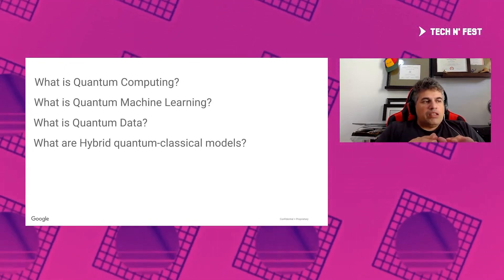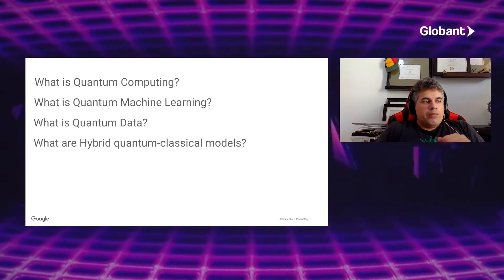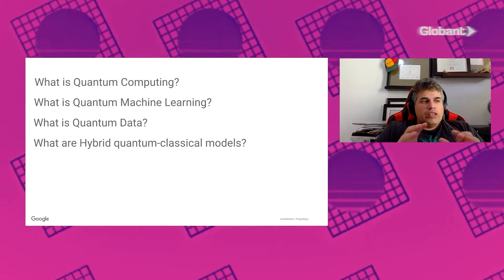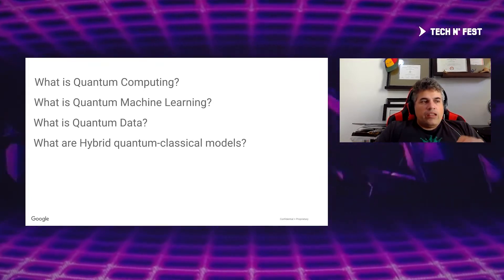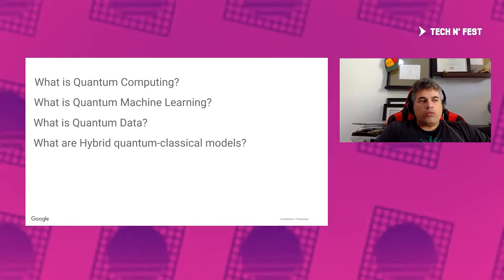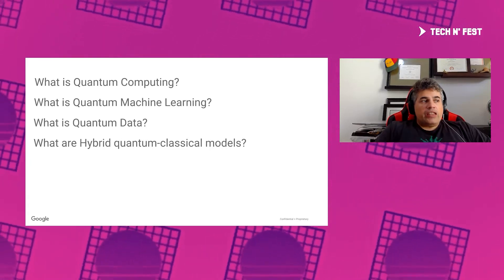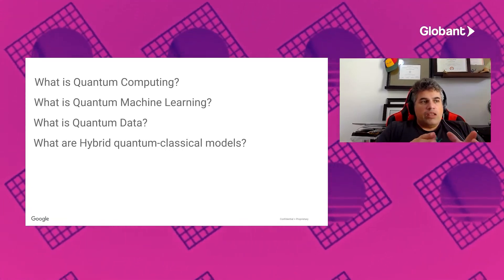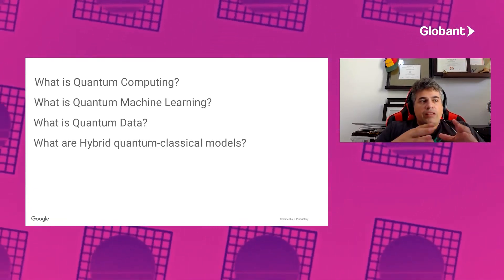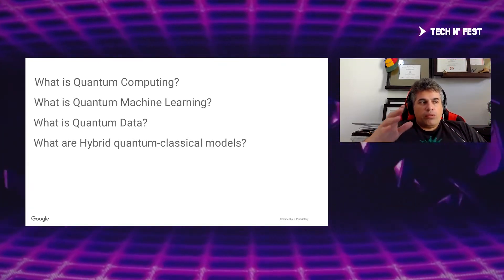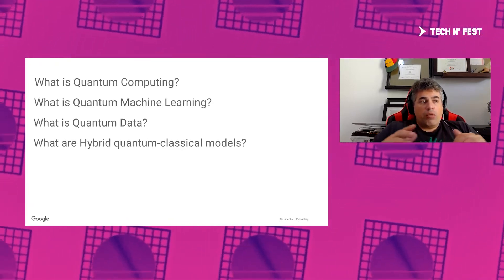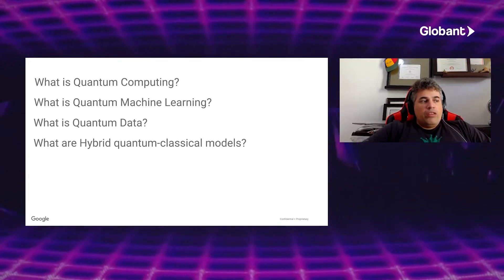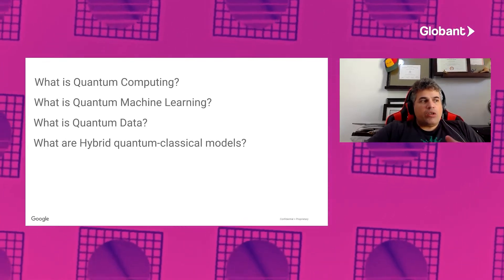We're going to review what superposition and entanglement mean. But first, let me explain quantum machine learning. Quantum machine learning is built on two concepts: quantum data and hybrid quantum-classical models. Quantum data is any data source that occurs in a natural or artificial quantum system — it can be data generated by a quantum computer, like samples from Google's Sycamore processor used for quantum supremacy demonstrations. We also need to think about hybrid quantum-classical models.